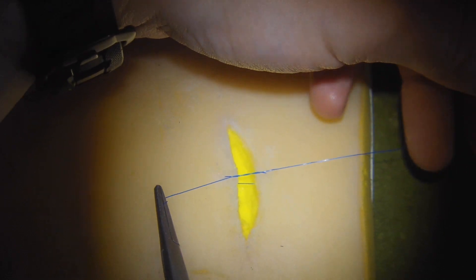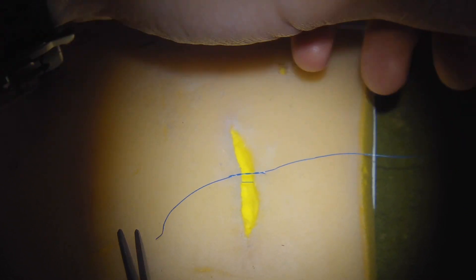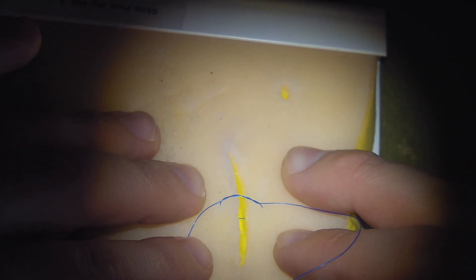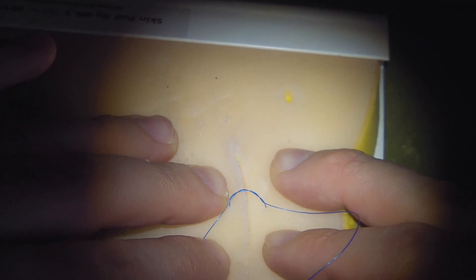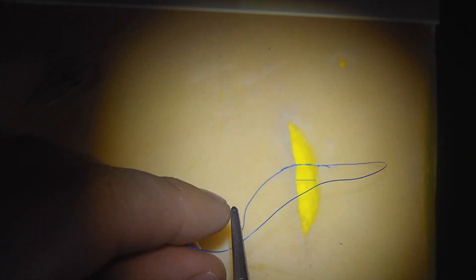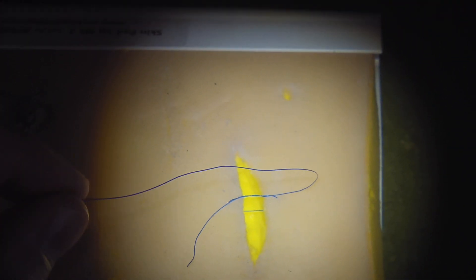But here we've got quite a lot of tension, so it's going to slip. It's opening up. So what we often do in this scenario is we ask our assistant to hold the wound edges together while we pull the knot down tight. But that can be time consuming. You don't always have an assistant. So it is easier to use this tension relieving technique.